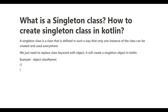The next question is: what is a singleton class? A singleton class is a class that is defined in such a way that only one instance of the class can be created and used everywhere. To create a singleton class in Kotlin, we just need to use the object keyword instead of the class keyword. It will create a singleton object in Kotlin.